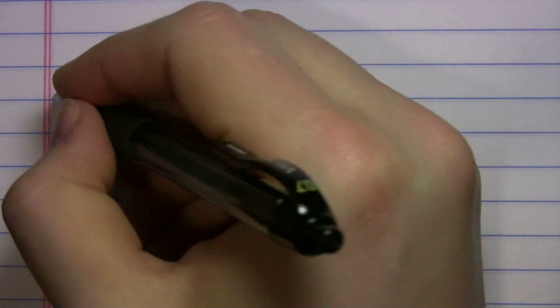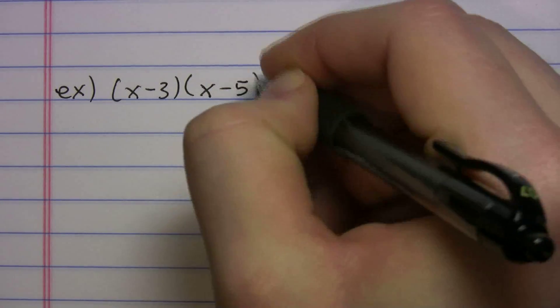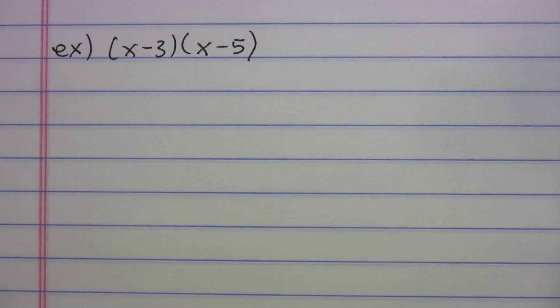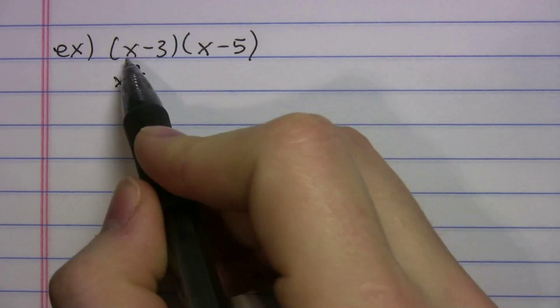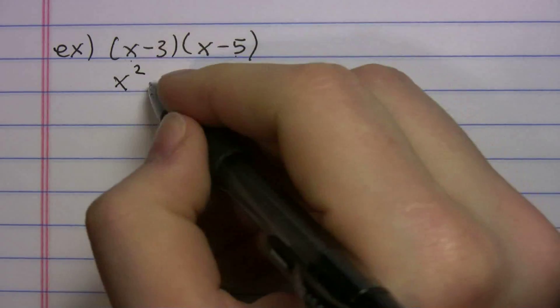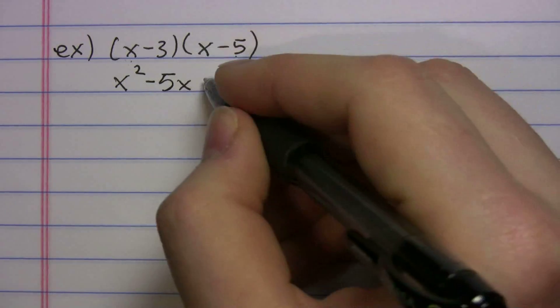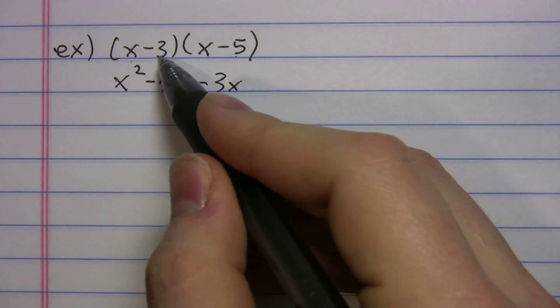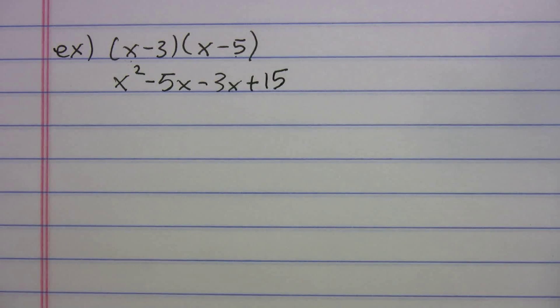Let's do one with two negatives: (x − 3)(x − 5). You can pause the video to try it on your own. First: x times x = x squared. Outer: negative 5 times x = negative 5x. Inner: negative 3 times x = negative 3x. Last: negative 3 times negative 5 — a negative times a negative gives a positive.